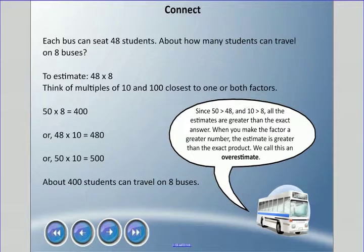Here's a little note. Since 50 is greater than 48 and 10 is greater than 8, all the estimates we would come up with using these compatible numbers are greater than the exact answer. When you make a factor with a greater number, the estimate is greater than the exact product, and we call this an overestimate.